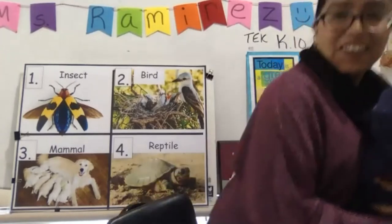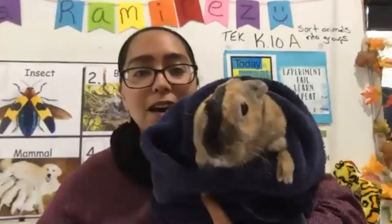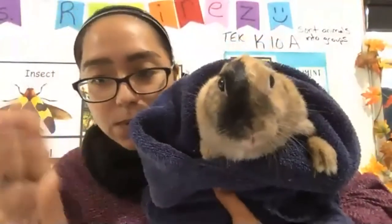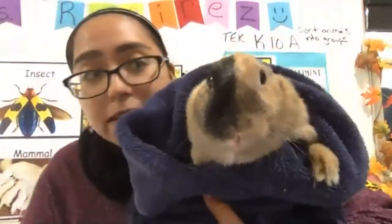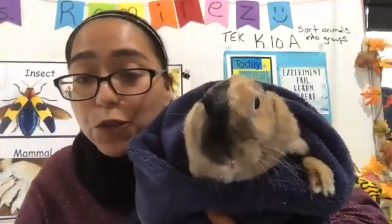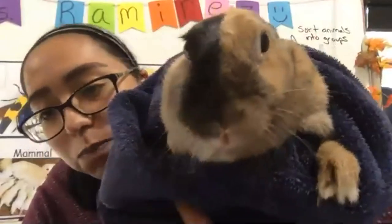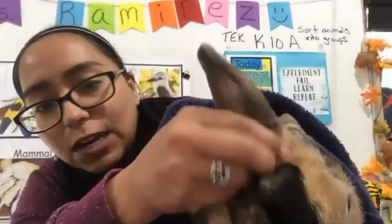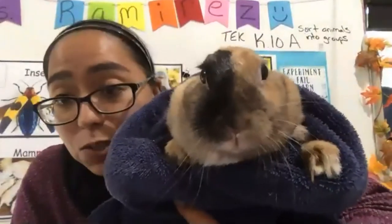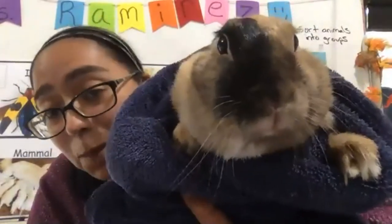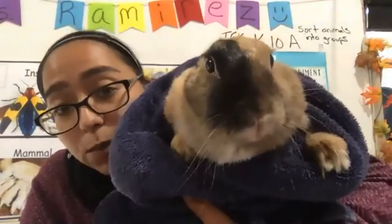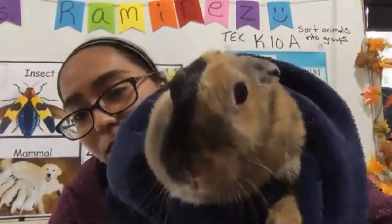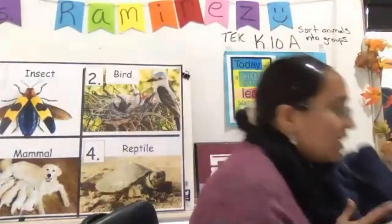Here is my bunny — this is Mochi. We know Mochi is a mammal because if you were to touch her, her body is covered with soft fur. Look at her nose — look how it's twitching. She's smelling. Look at those big eyes and really long ears to help her listen. We know she's a mammal because her body is covered with hair, she has a long backbone, and when she was a baby she drank milk from her mother.